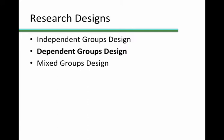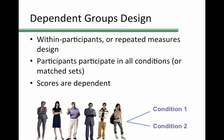We can alternatively have a dependent groups design. Typically, in this type of design, the same participants participate in all levels of the independent variable, and their scores for each level are compared to each other. This type of design is also referred to as a within participants or repeated measures design. Scores are said to be dependent on each other since the scores from one condition came from the same participants as the scores from the other condition. Because the same participants are used in each condition, it is expected that the scores are going to be related in some way.